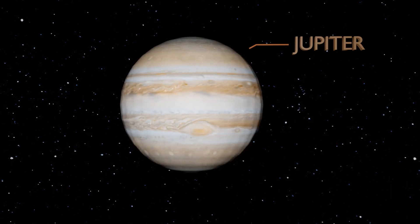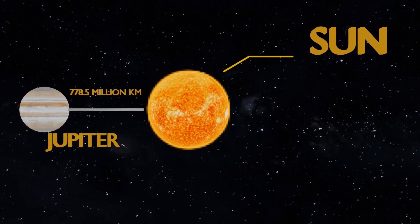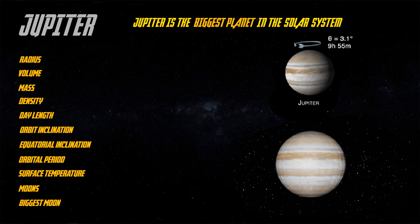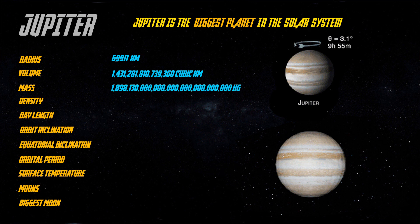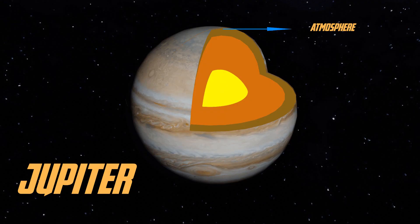Jupiter is the biggest planet of our solar system. It is 778.5 million kilometers from the Sun. Its atmosphere is mainly made up of hydrogen. On Jupiter, solar storms cause huge auroras. Jupiter has 79 moons, and its biggest moon is Ganymede. It has mainly three layers.